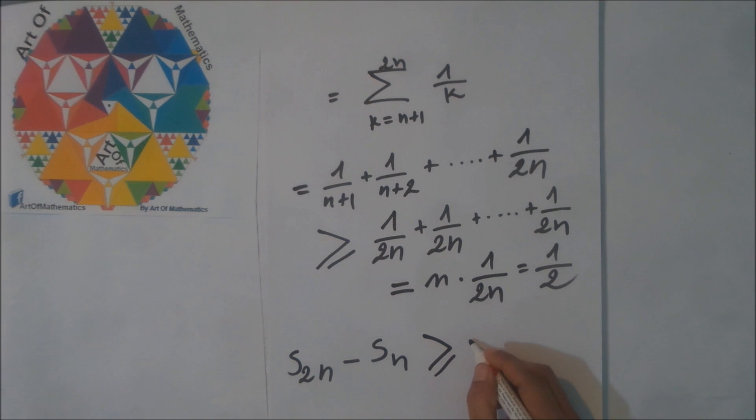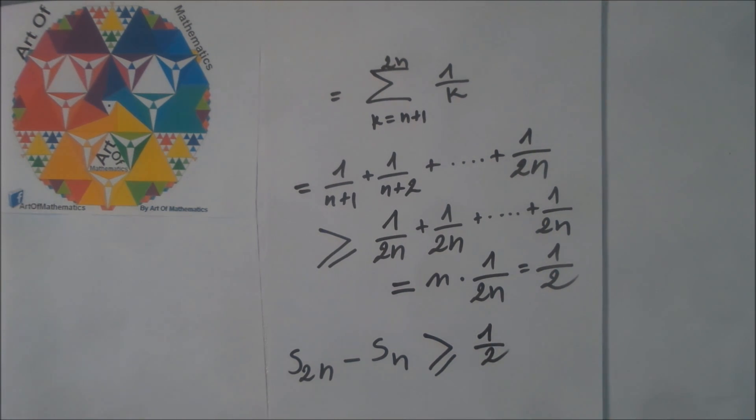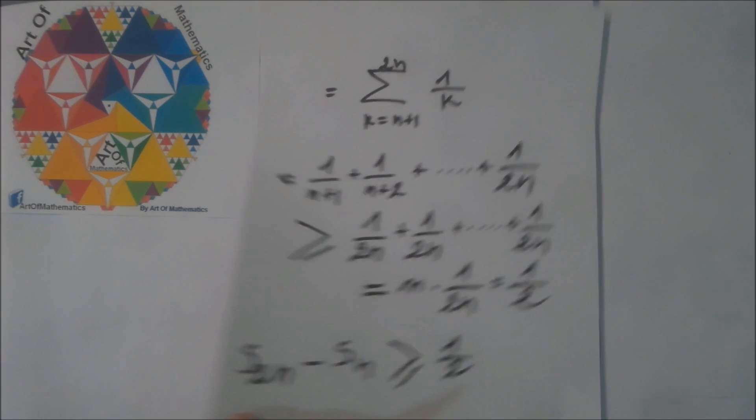Now we have shown that S(2n) minus Sn is greater than or equal to one-half. Therefore, our sequence Sn is not a Cauchy sequence, then it is a divergent series. We also found that Sn is increasing, so finally it tends to infinity.